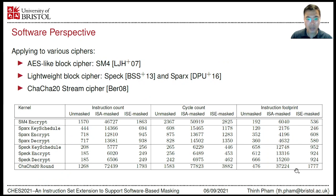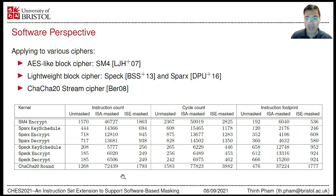To demonstrate the generality of the ISE, we also evaluated its utilization for other cryptographic kernels, namely SM4, SPECK, and ChaCha20. As shown in the table, the base ISA mask implementations suffer enormous increased overheads. The ISE-assisted masking, as expected, gains more than one order of magnitude overhead reduction in terms of instruction count and cycle count in comparison to the base ISA alternative.